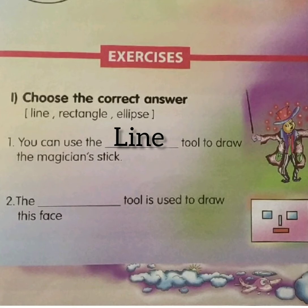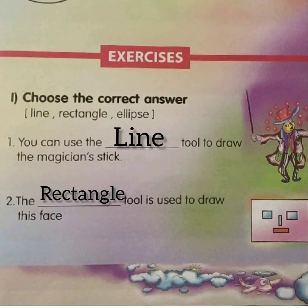Second question: the blank tool is used to draw this face. You can see in this picture the face, eyes, nose and mouth are drawn either in rectangle or square shape. So the answer is rectangle tool. The rectangle tool is used to draw this face. Write the answer as rectangle.